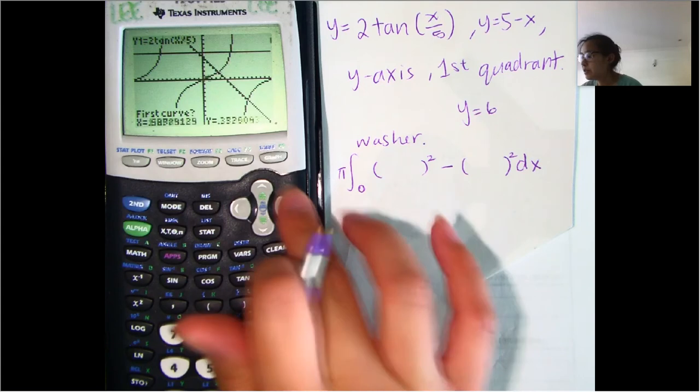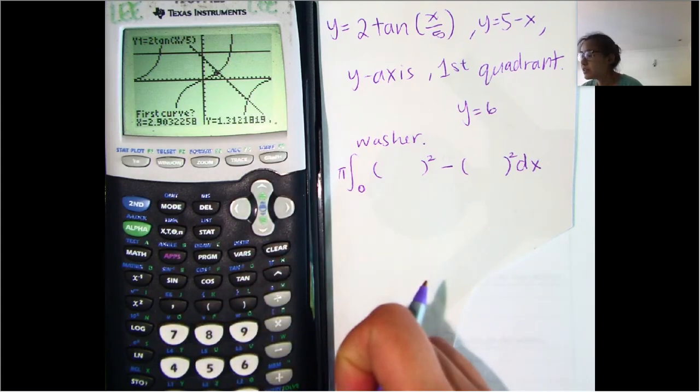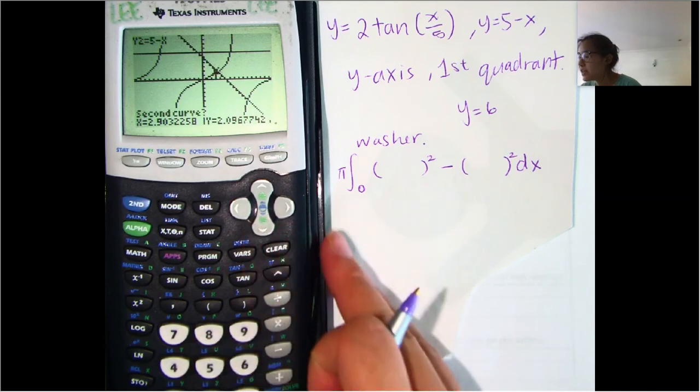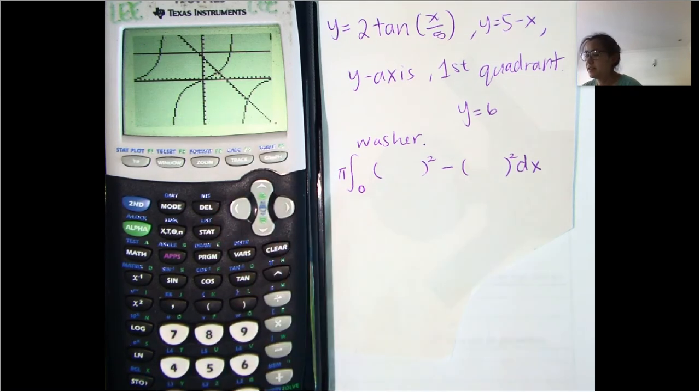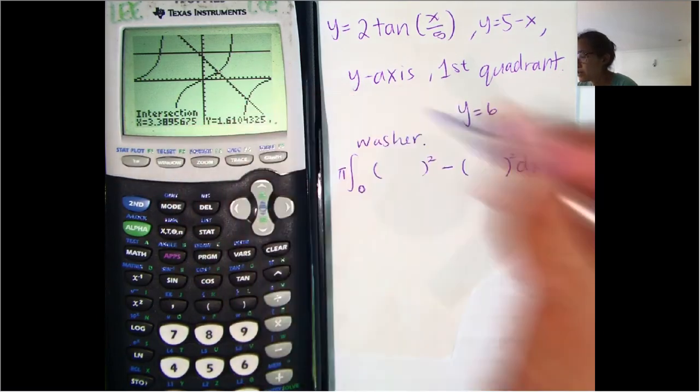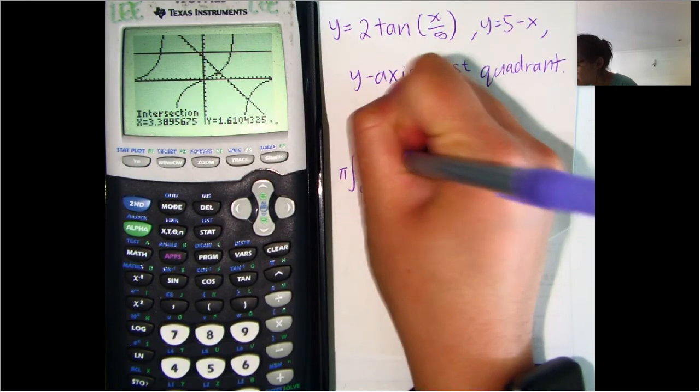And so we will scroll over there and say first curve, say second curve, and then we'll get a little closer and we'll do our guess. So the intersection point there is 3.3895, so 3.389.